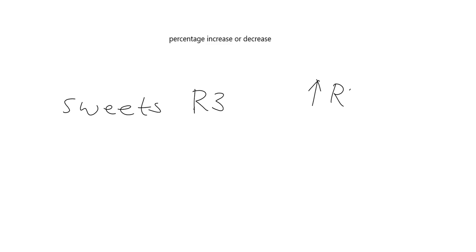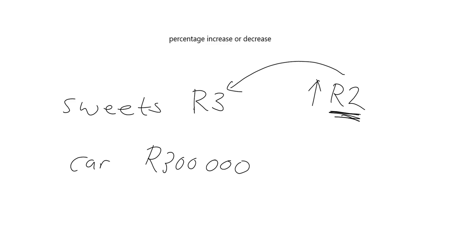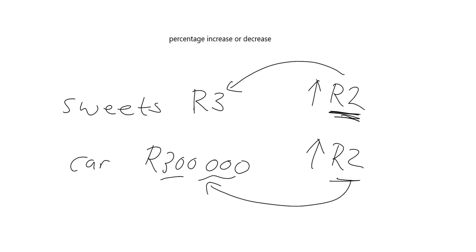...and the price is going to increase by two rand, you can see that two rand is quite a lot relative to the three rand you started with. However, if I'm talking about a big fancy car that costs three hundred thousand rand and the price goes up by two rand, that two rand is really not very much in relation to the price of the car. That's why we're interested in percentage increase or decrease — it helps us see how much the increase or decrease is in relation to the price we started with.